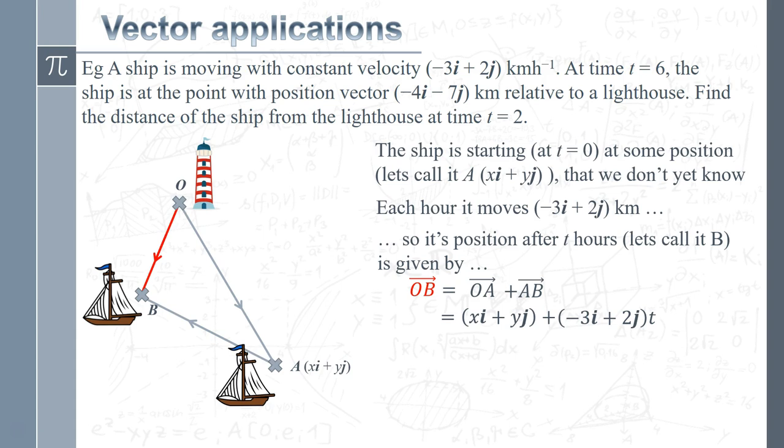Now, that's a little bit complicated, so what I'm going to do is just tidy it up a little bit and bring together all my horizontal components. So the i components, I've got x minus 3t lots of i, and I've got y plus 2t lots of j. So I'm going to split that out into the i and j components. So that's my vector OB.